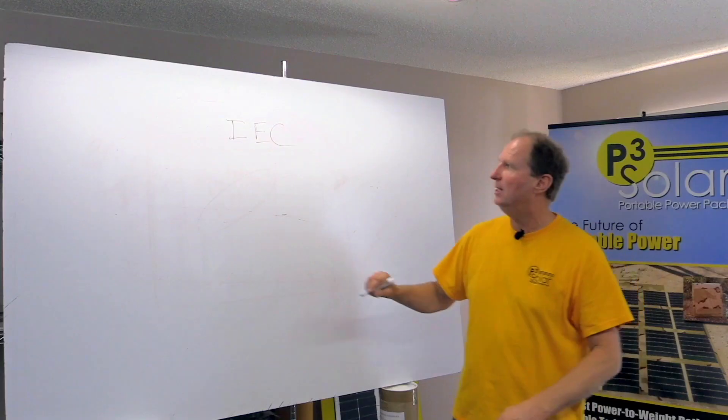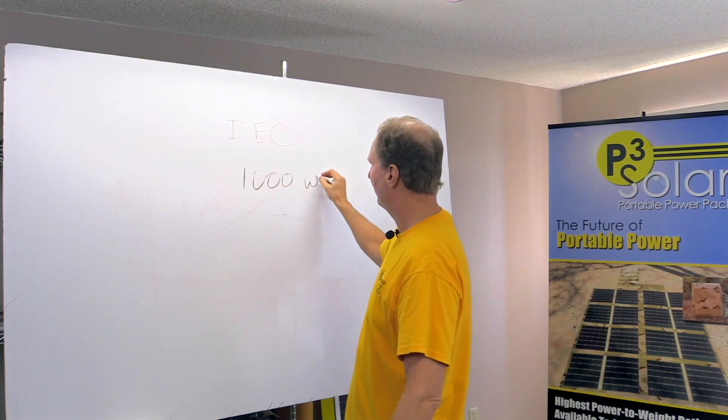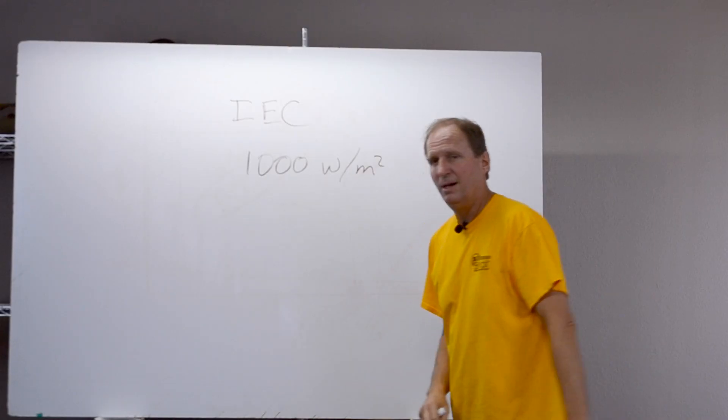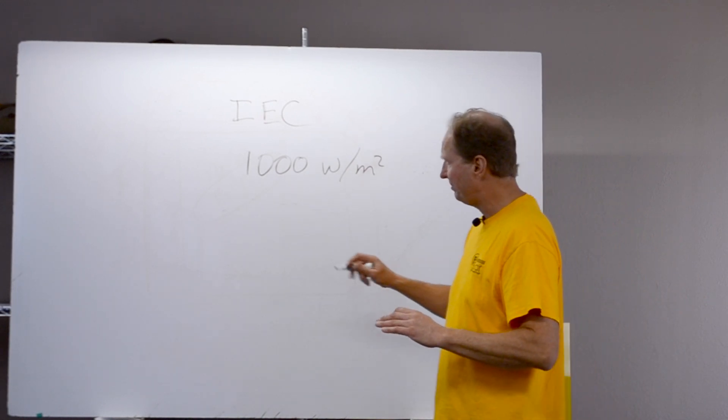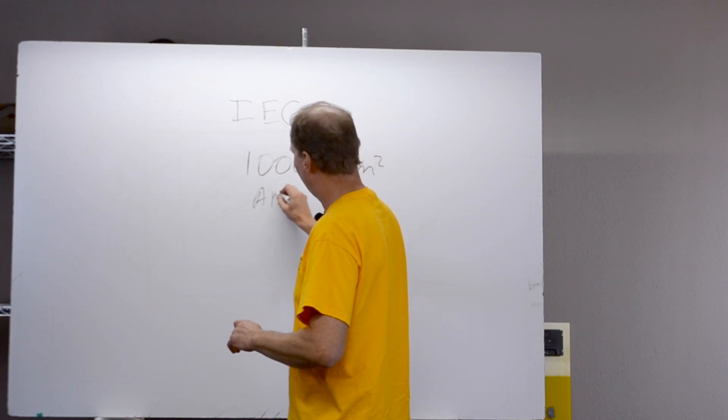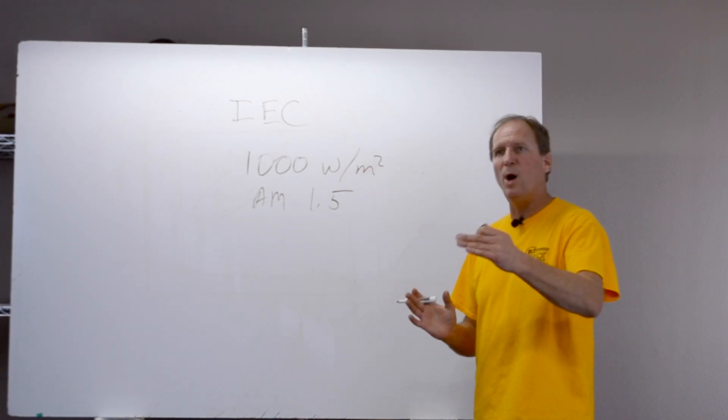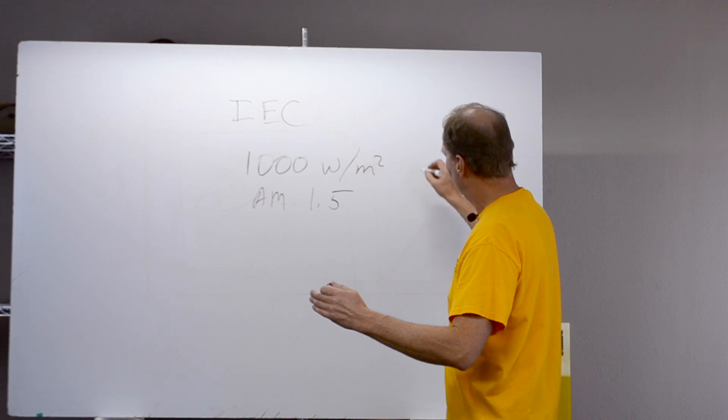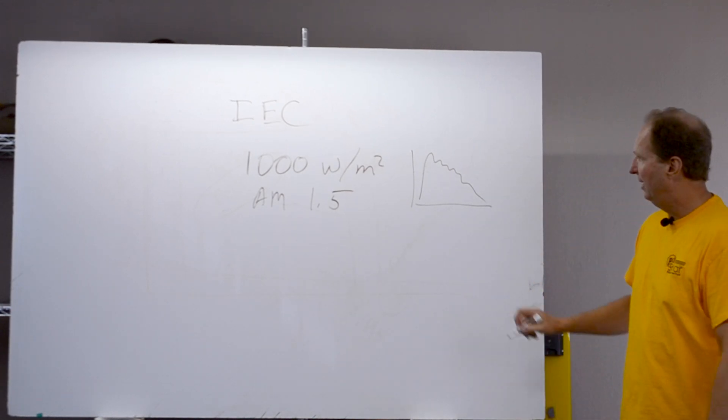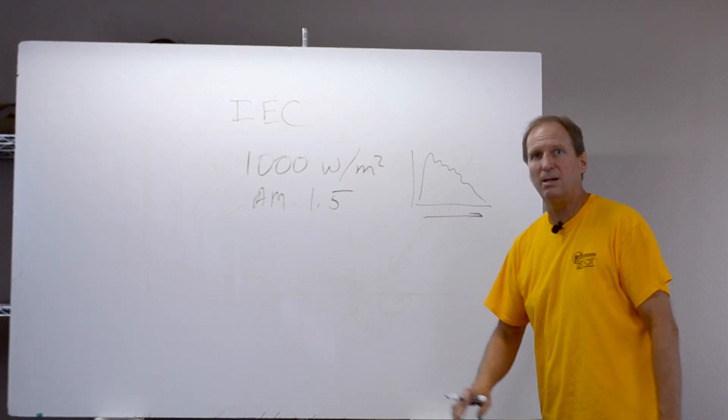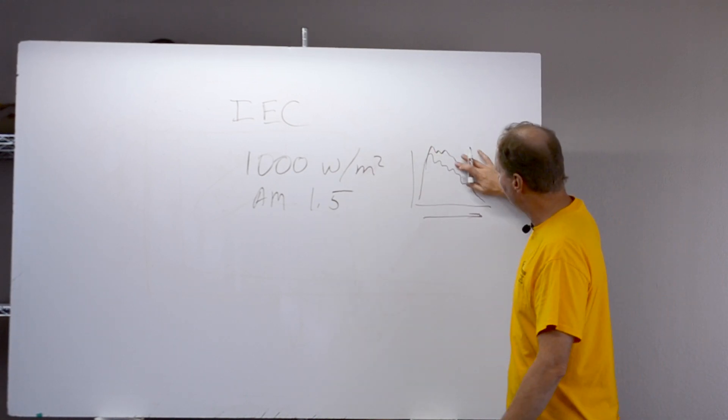So what IEC dictates is that you test the solar panel at a thousand watts per square meter, which is a little less than Tucson has. And at an air mass 1.5, now air mass is the thickness of the atmosphere, so it's one and a half atmospheres, and that dictates this profile of solar irradiance. And this is wavelength as it gets longer, and depending on how much air mass you have, these peaks move around. So at one and a half air mass, it's slightly lower.